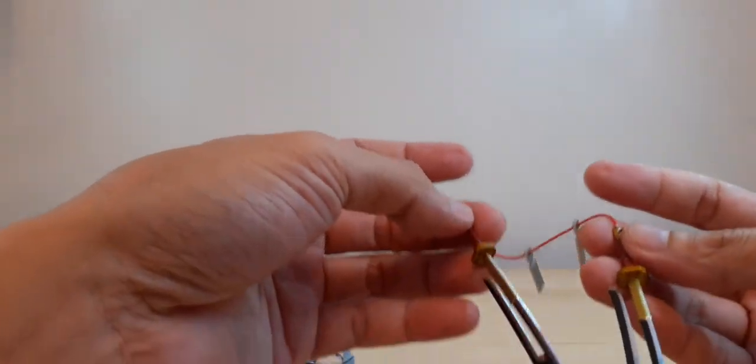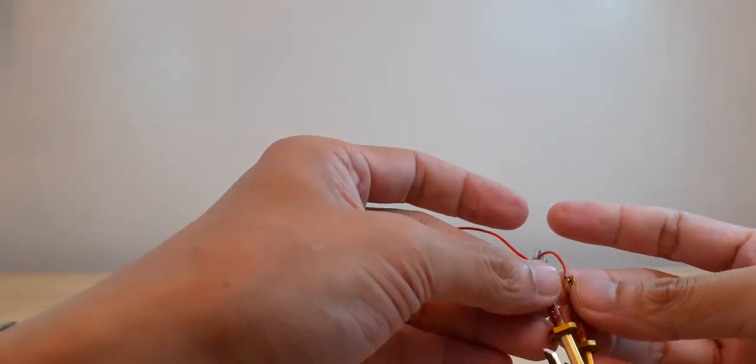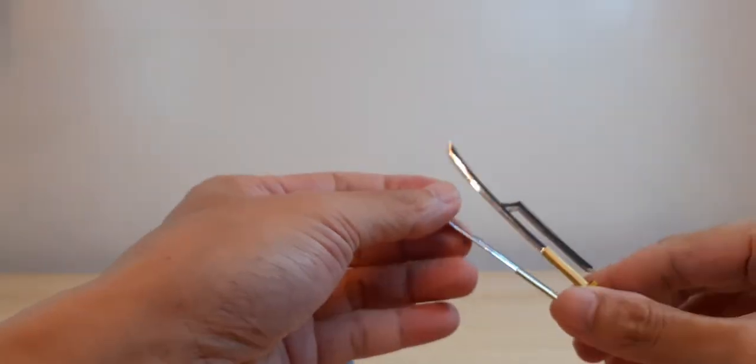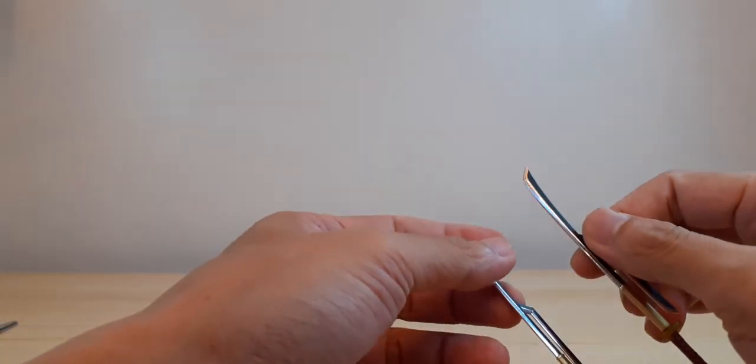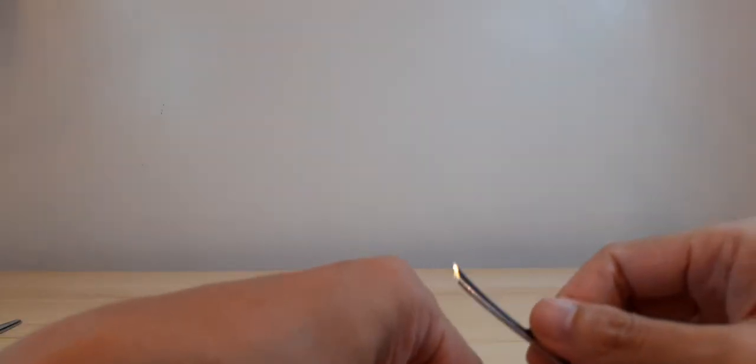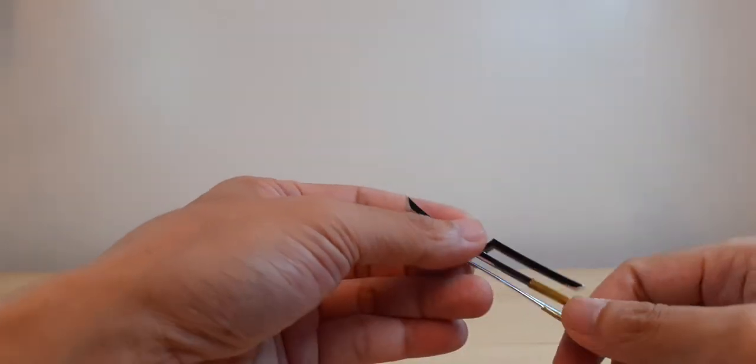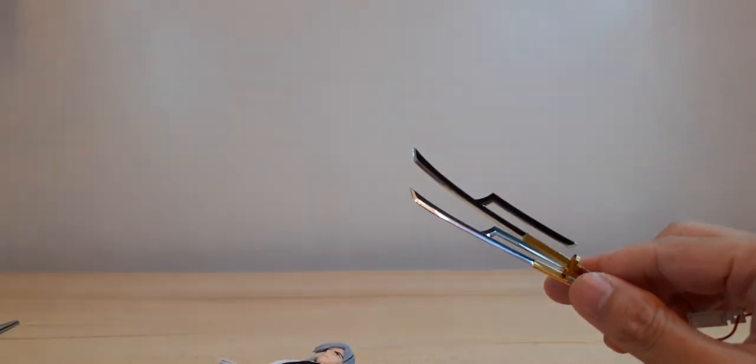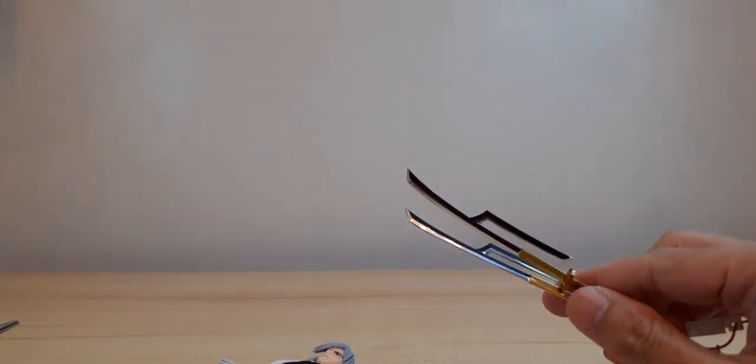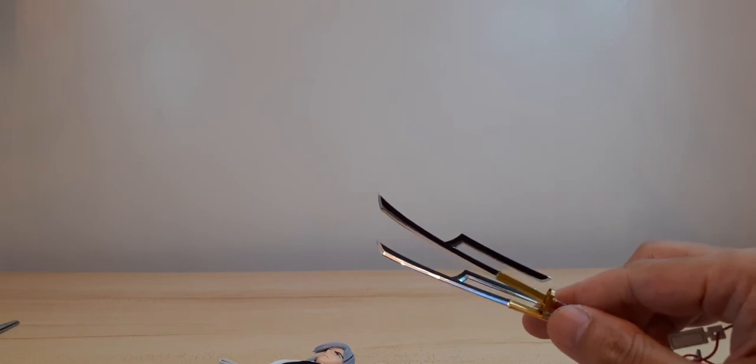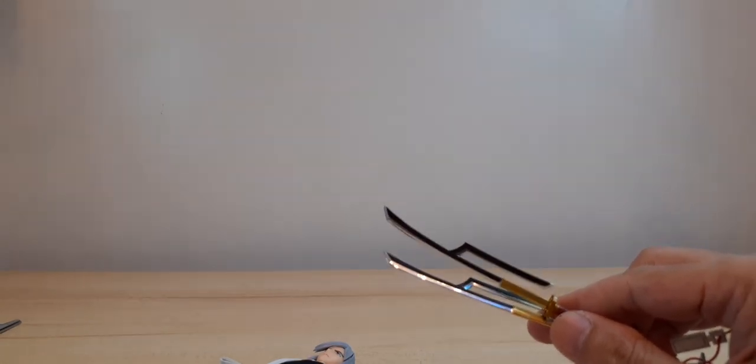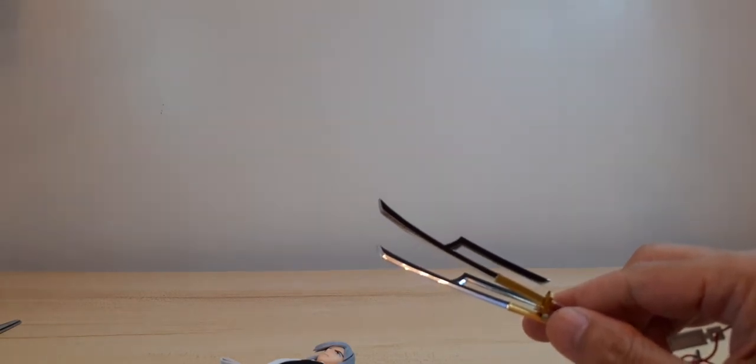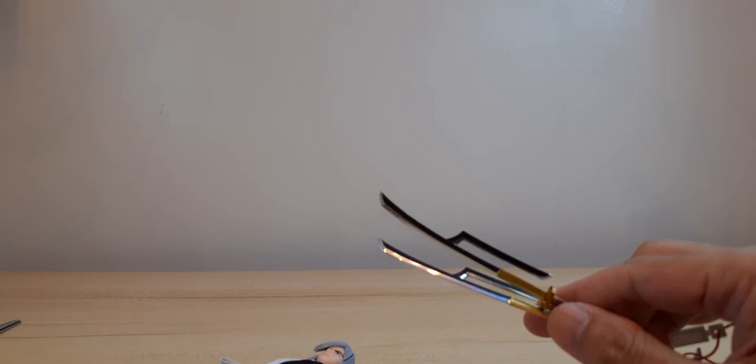So originally he only has one sword, just the normal katana, not with this extension. And then he shouts his chant: 'All waves, rise now and become my shield. Lightning, strike now and become my blade.'